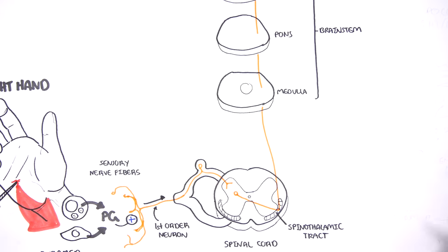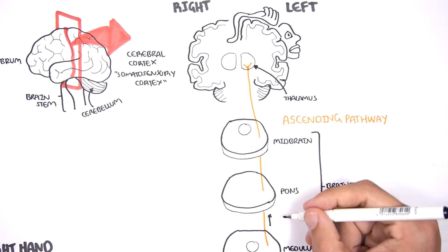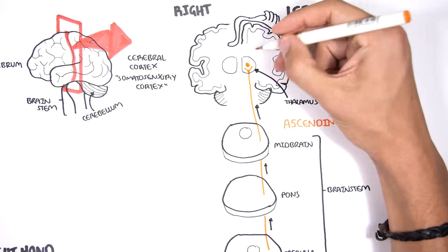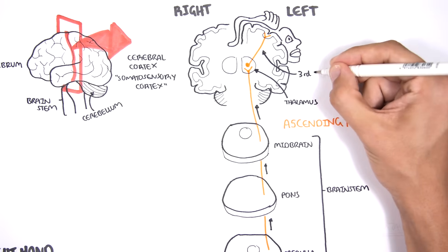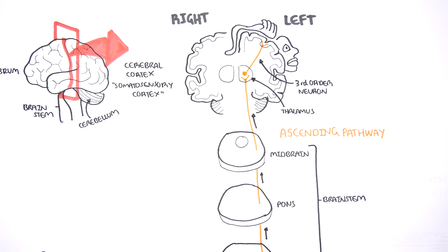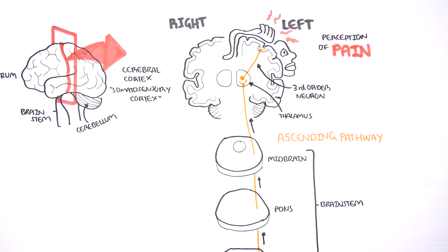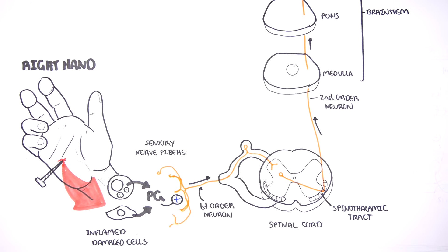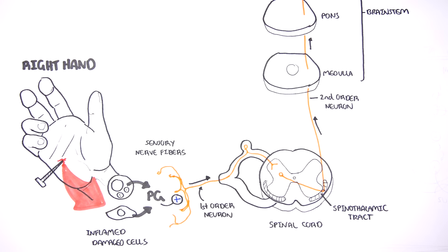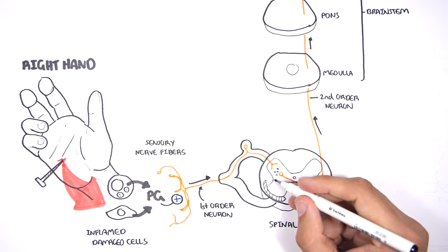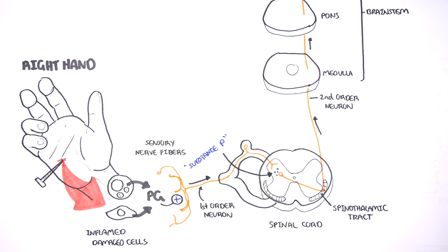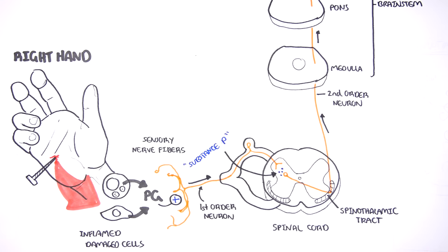The thalamus is the relay station. In the thalamus, the second-order neuron will synapse with the third-order neuron. The third-order neuron will carry this impulse and relay it to the region of the brain which correlates with the injured right hand, helping discern the area of injury. The cortex is where the perception of pain is perceived. Important to remember: this is the left side of the brain, whereas the initial signal was on the right hand — sensation always occurs on the opposite side of the brain to where the stimulus originated. Also important is substance P, the chemical released by the first-order neuron to relay the signal to the second-order neuron at the dorsal horn.